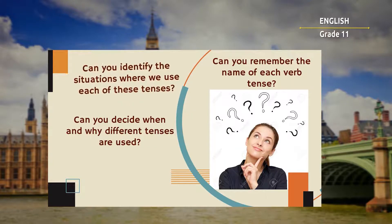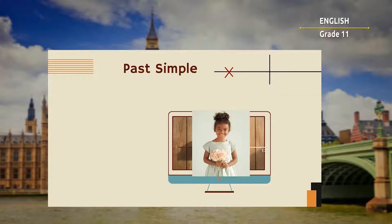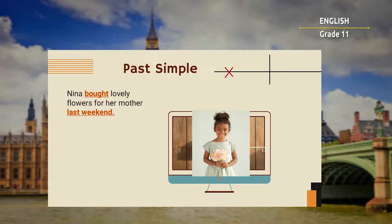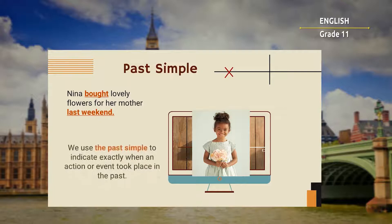Can you identify the situations where we used each of these tenses? Can you decide when and why different tenses are used? Can you remember the name of each verb tense? Let's see all the narrative sentences in detail and make some clarification. Nina bought lovely flowers for her mother last weekend — it is a completed action with a specific time in the past. We use the past simple to indicate exactly when an action or event took place in the past.